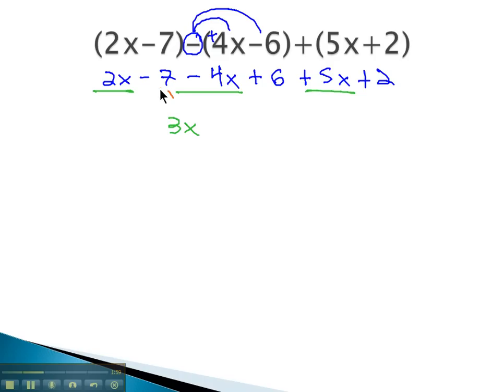Finally, with the numbers, negative 7, we add 6 and add 2. Combining those like terms together gives us a positive 1. And so, after combining all our like terms here, we have 3x plus 1 for our final solution.